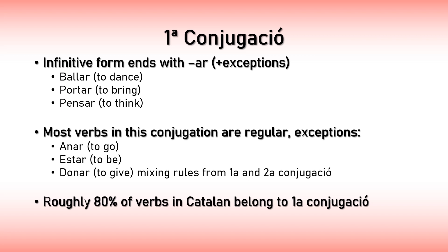Good news: most verbs in the first conjugation are regular, so they're very easy to learn. There are only three exceptions: anar (to go), estar (to be), and donar (to give). These three are irregular, but the rest are regular. Also, more or less 80% of the verbs in Catalan belong to the first conjugation, so most verbs in Catalan are indeed regular.